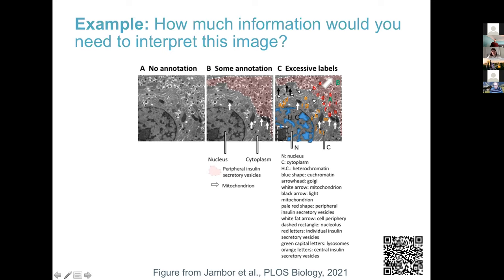In the next panel, we have some annotations — labeling the peripheral insulin secretory vesicles, the mitochondria, the nucleus, and the cytoplasm. This helps orient us to the features shown and how they relate to our research question. In the third panel, we have so many labels that they're hard to see and they're covering the image. We also have a large legend of text that is supposed to guide us but in reality isn't very helpful. So this is too much annotation and not well done.